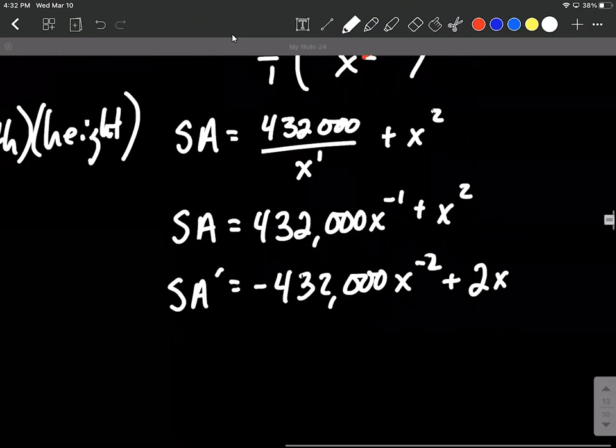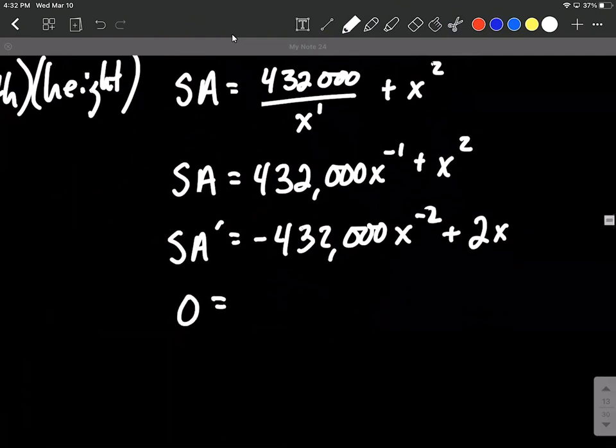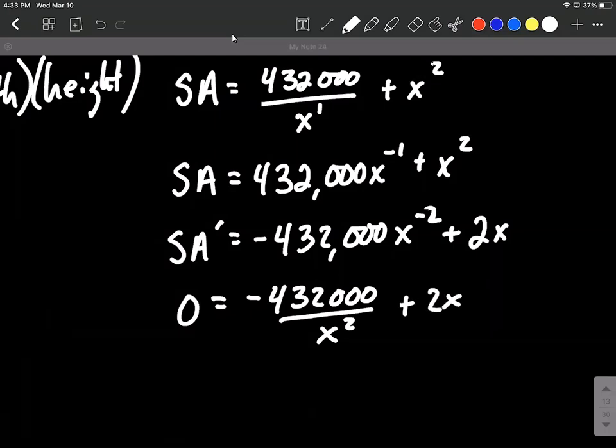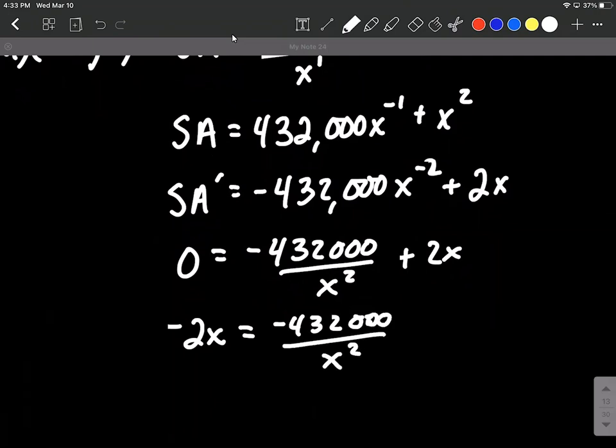And now we can get, we can find critical numbers by setting the derivative equal to zero and solving down. So set it equal to zero, 432,000. At this point, I'm gonna elect to move that back down and make it a positive exponent. You may not choose to do it that way, but I think that's probably the easiest way for me to visualize it. Now to solve for this, I'm gonna first move the two X to the other side. So subtract two X from both sides. Negative 432,000 over X squared.